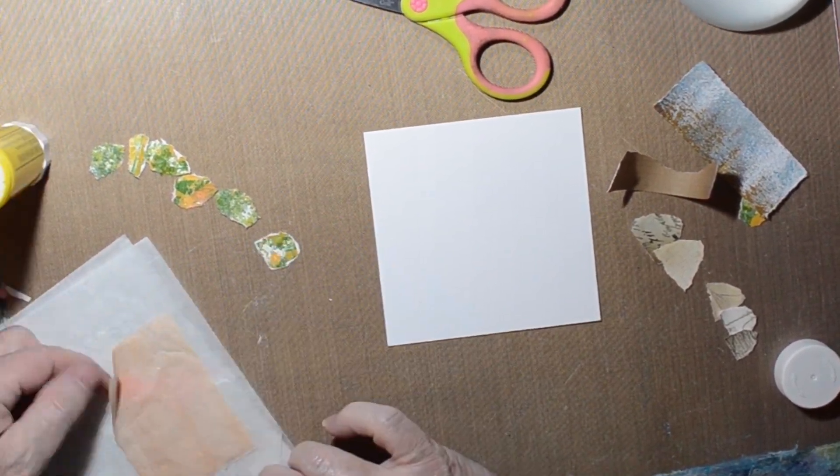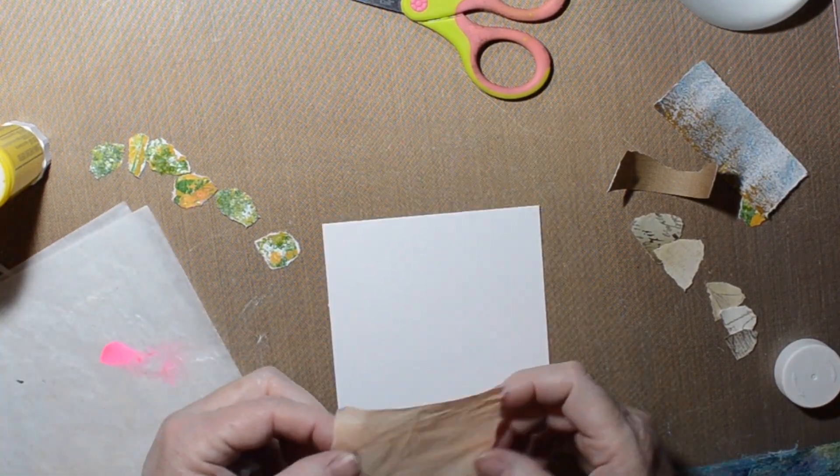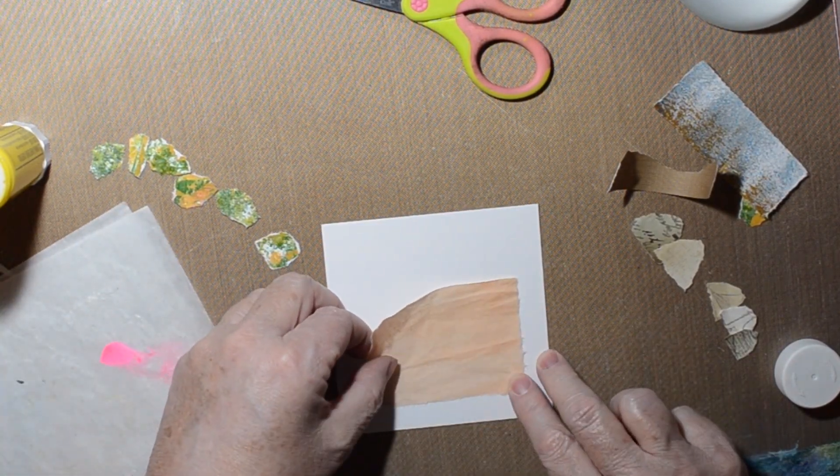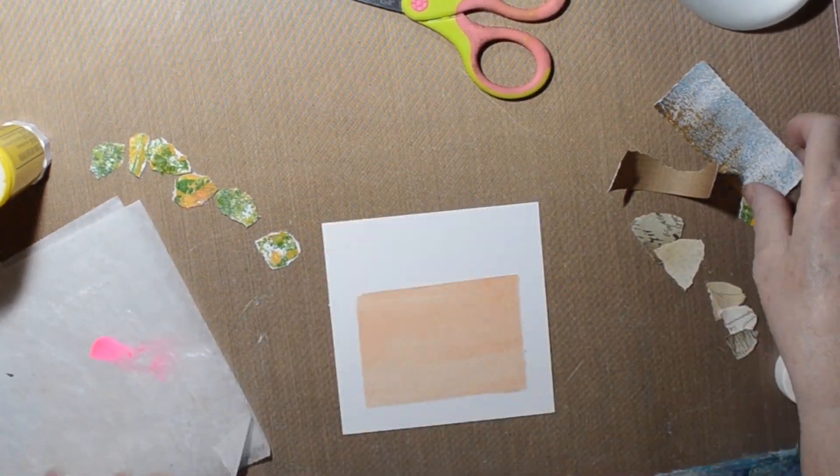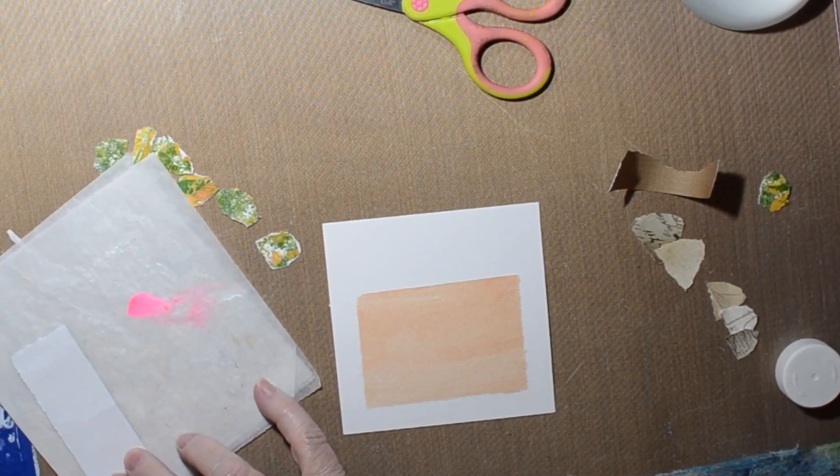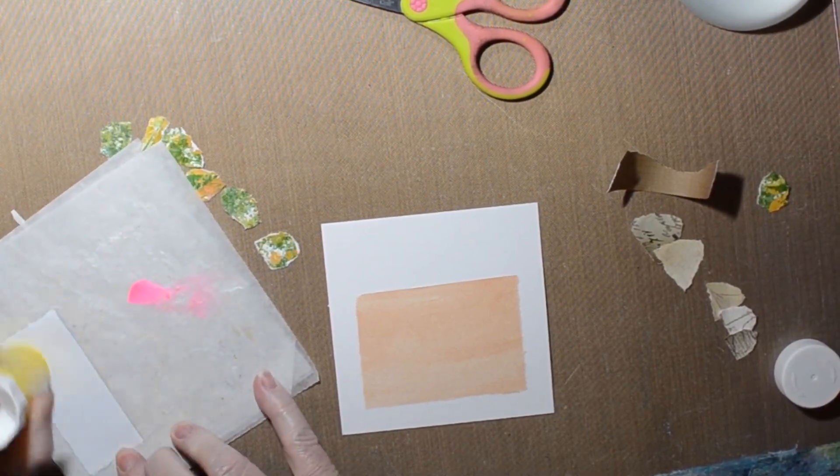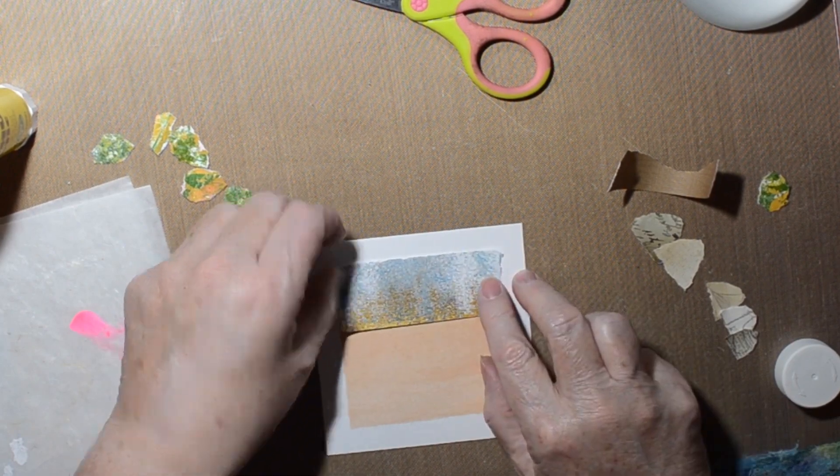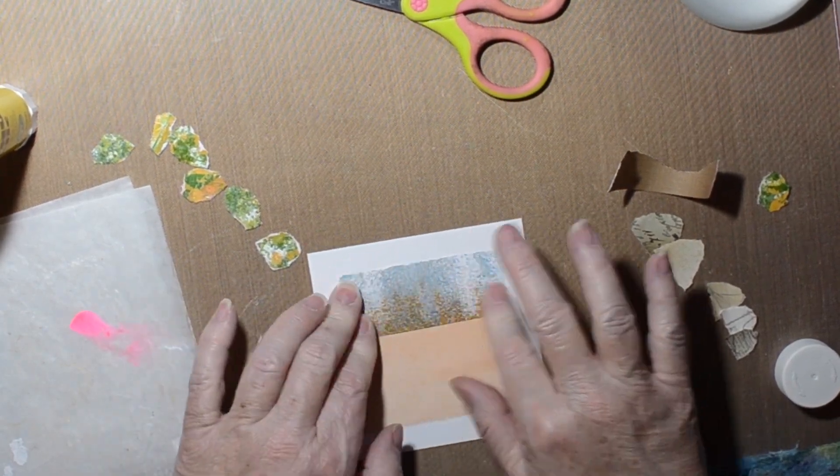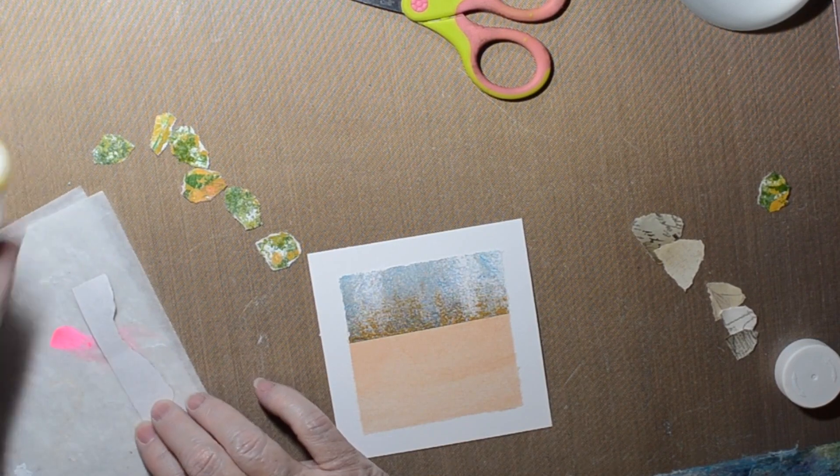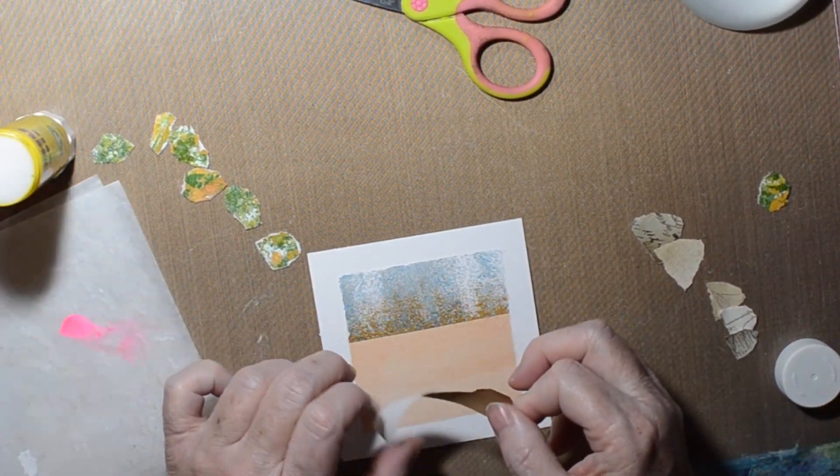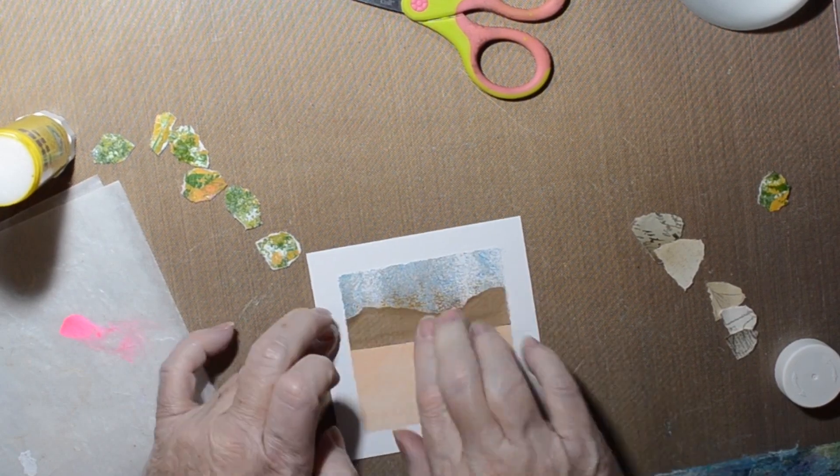This is day 61, and this picture is from Death Valley, and it's a picture of the charcoal kilns. I think they're called the Wild Rose Charcoal Kilns, and they were built around 1877, so they've been standing for a long time.